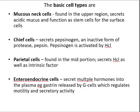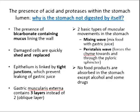The fourth cell type is the enteroendocrine cells, which secrete multiple hormones into the plasma. An example is gastrin, released by G cells, which regulates motility and secretory activity. With acid and protease present within the stomach lumen, why is the stomach not digested by itself?